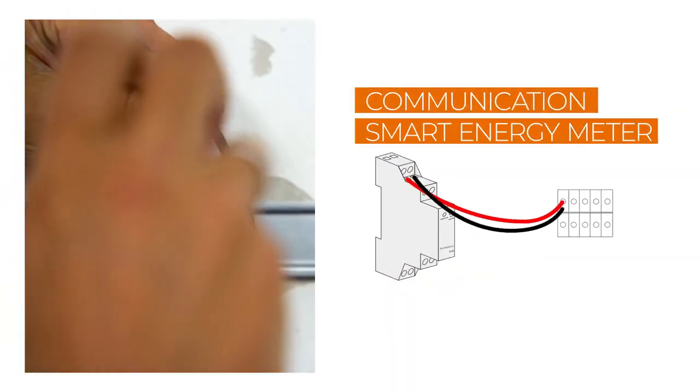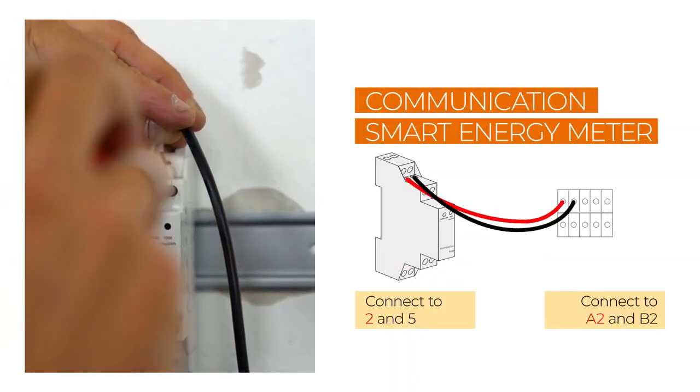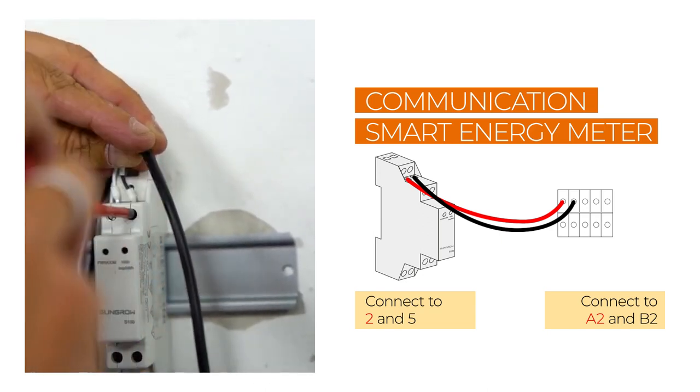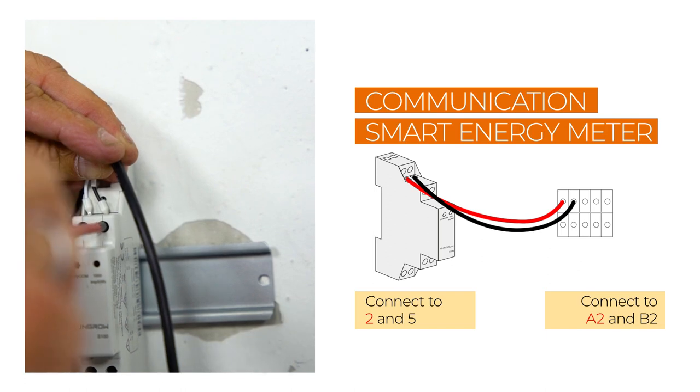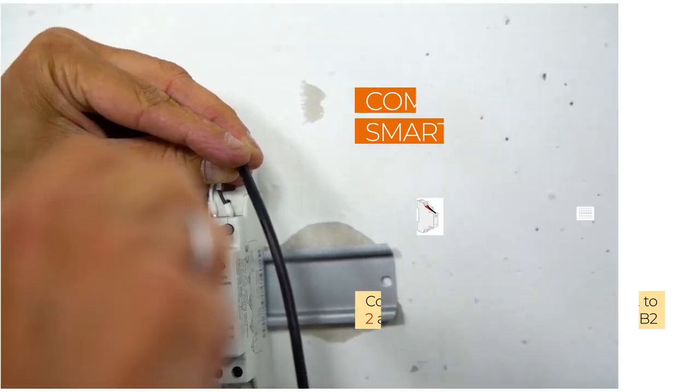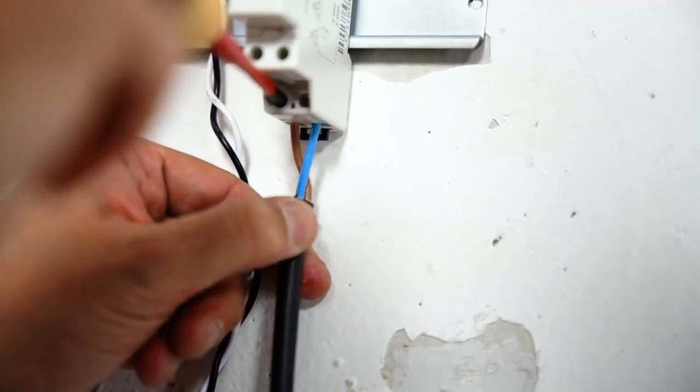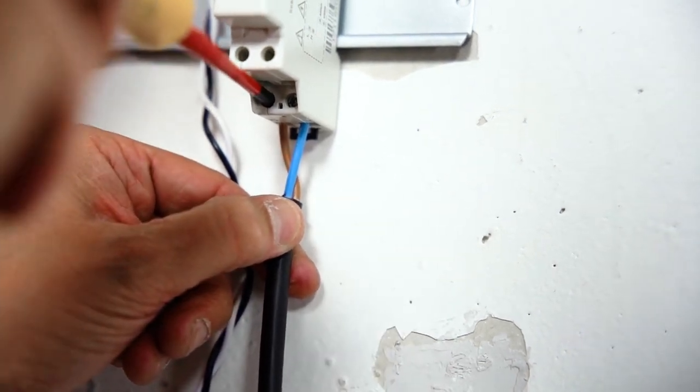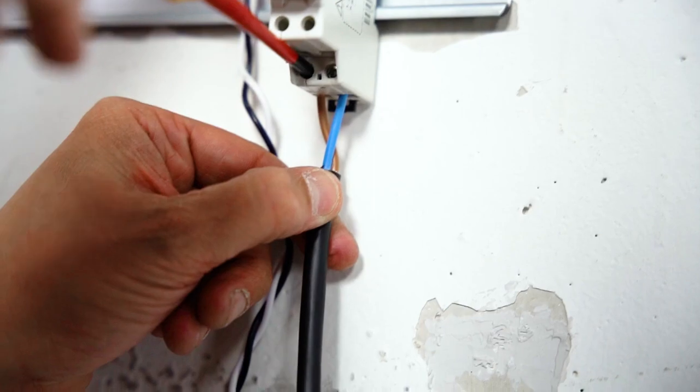Now let's connect the smart energy meter itself. Mount the meter on a DIN rail and connect the communication cable RS-485A to pin 2 and RS-485B to pin 5 on the meter. The meter must be supplied with 230 volts. Connect the line cable to pin 3 and the neutral cable to pin 6.